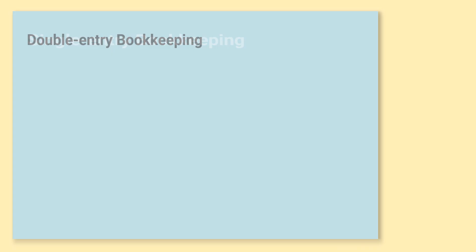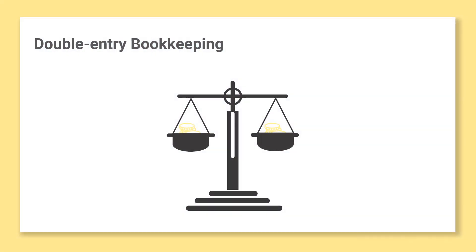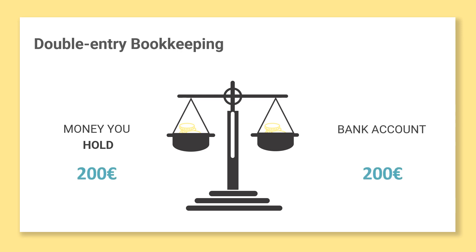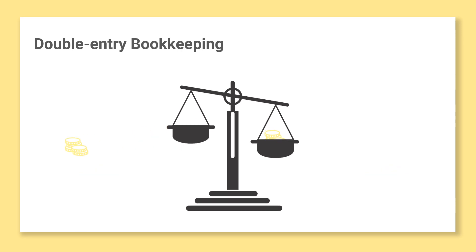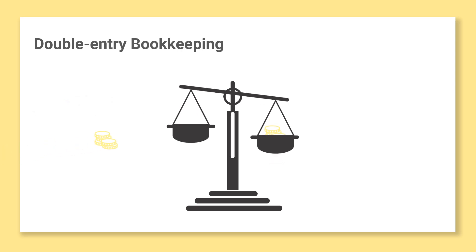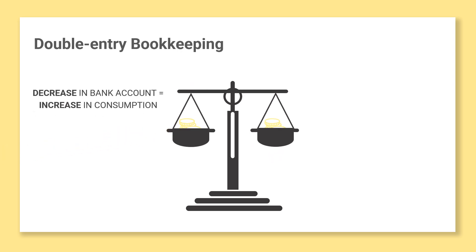Therefore, most NGOs probably use double-entry bookkeeping. The basis of double-entry bookkeeping is an equation between the money you hold on one hand and where that money comes from on the other. If you own 200 euros and you have 200 euros in the bank account, the scale is in balance. If you then use 100 euros for buying pizza for your team, your bank account will decrease by 100 euros, but the consumption will increase with 100 euros.